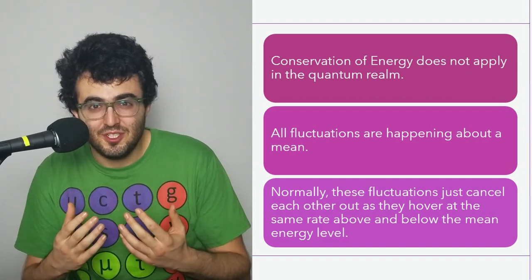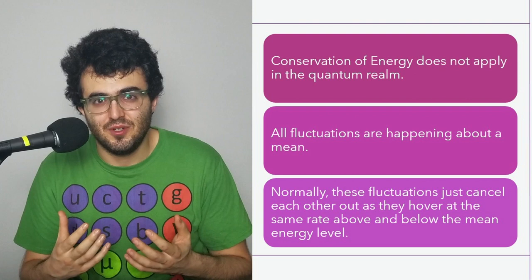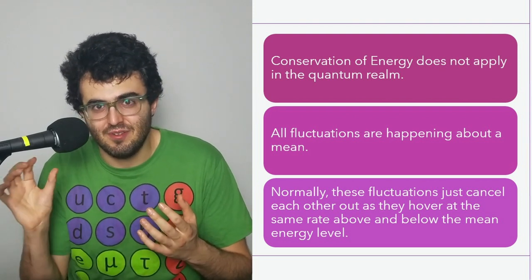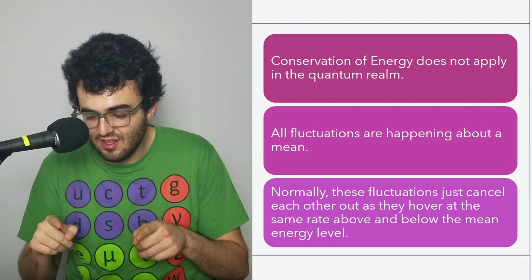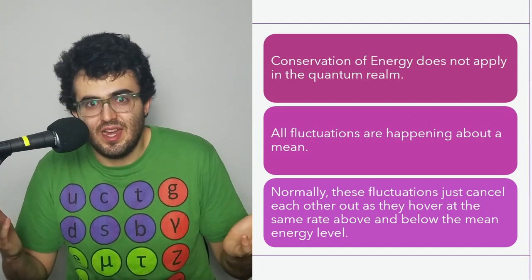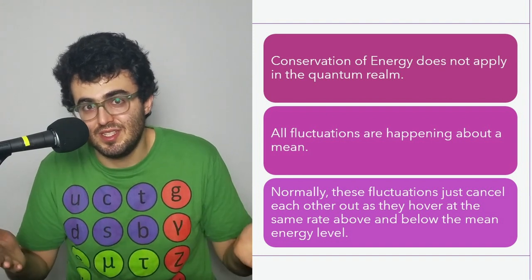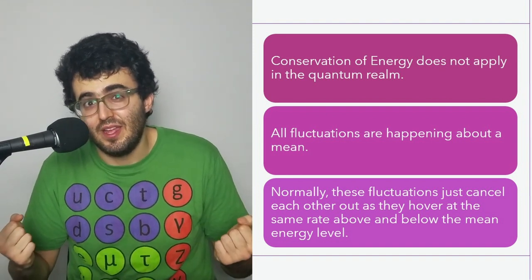Normally, this prevents any of these quantum fluctuations from becoming real sustained fluctuations because they're waxing in and out of existence and they're constantly around this average mean so that if you look at a large enough scale, you don't really see any fluctuations at all because they're all canceling each other out. And over time, each individual one is canceling itself out either way.